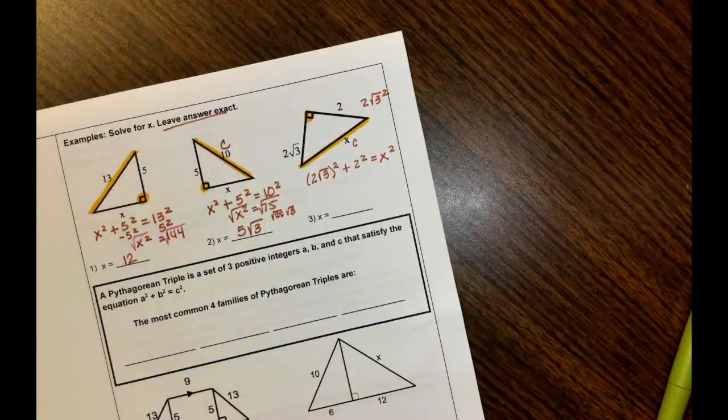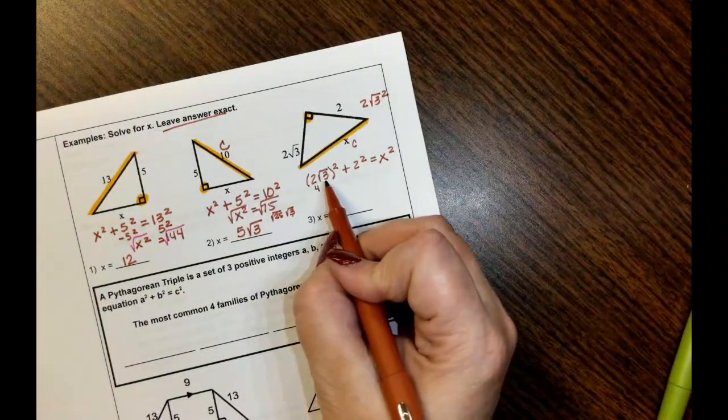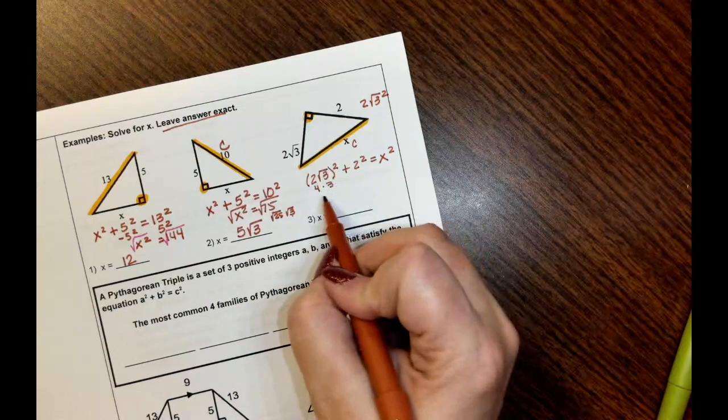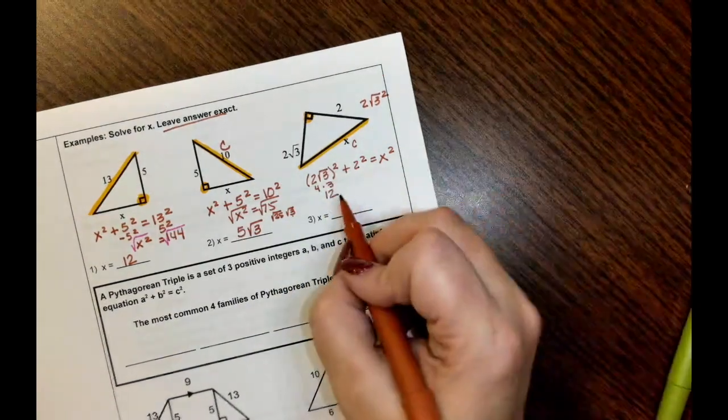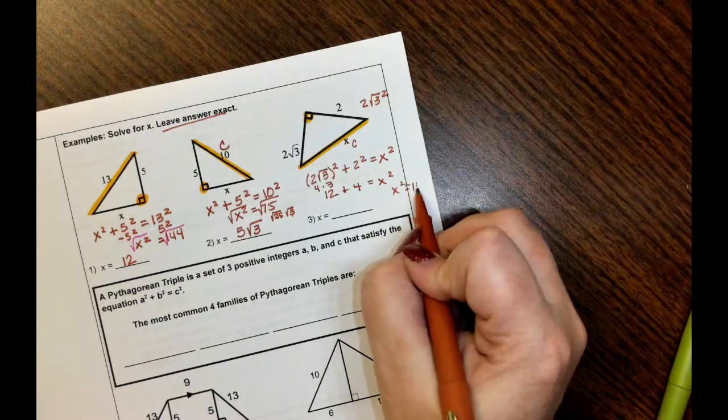You should get 12. Here's the reason I knew that was wrong. Because 2 squared is 4. The square root of 3 squared is 3. So I knew that had to be 12. 12 plus 4 is equal to x squared. x squared is 16.